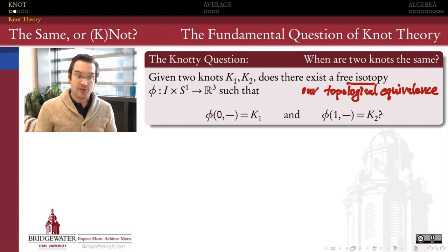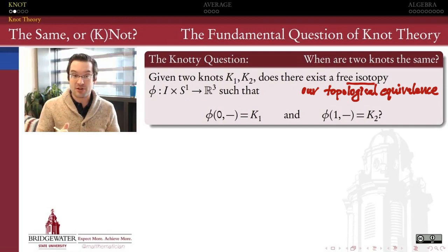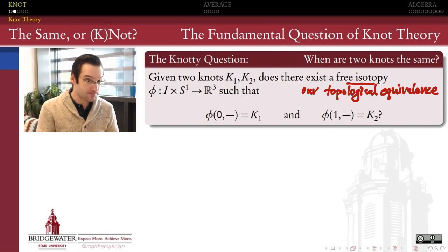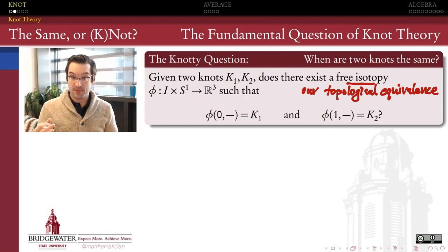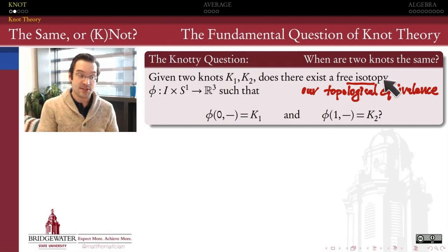What is the most important question in knot theory? The most important question is: when are two knots the same? If you give me one parameterization of one knot and another parameterization of another knot, how can I tell whether those two knots are in fact the same? Which leads us to ask: what is our notion of equivalence in knot theory?